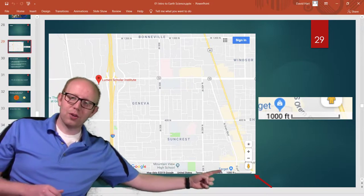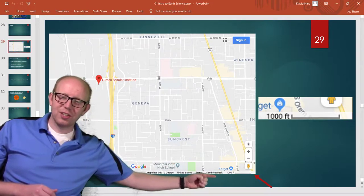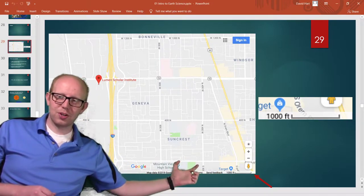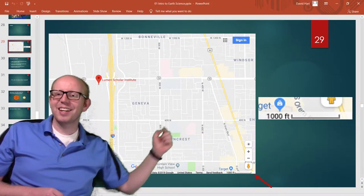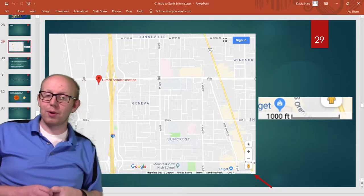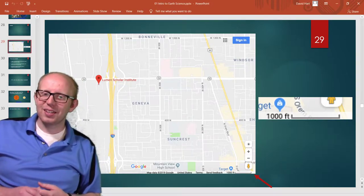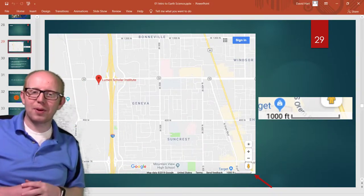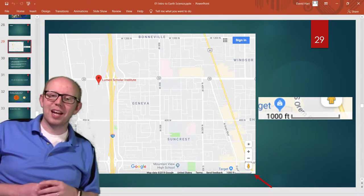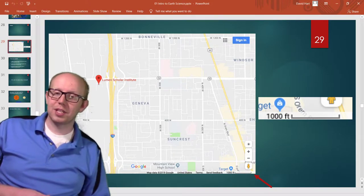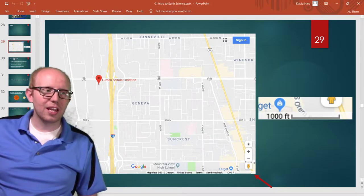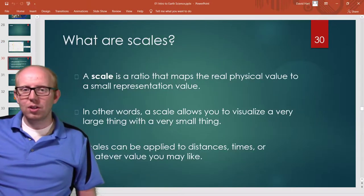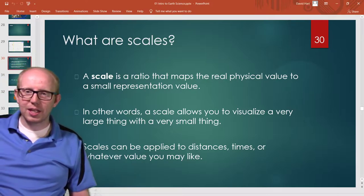It tells you how far that width represents. So even though we have this little tiny map on our screen we can actually see how far that representation actually is. This is an example of a scale. So a scale is something we set up that is kind of a ratio that maps our real physical world value to some other small representation value.